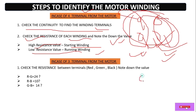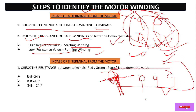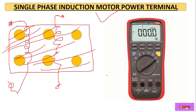In some cases, the common terminals are connected inside the motor during winding. In that condition, only three terminals are taken out at the power terminal connection box. In this situation, we simply have to check the resistance between the three terminals one by one — like R and G, then R and B, and G and B — to identify which one is running and which is the starting winding.